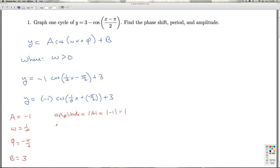I know that the period is going to be 2 pi over omega, which is 2 pi, in this case over 1 half, which is 4 pi.